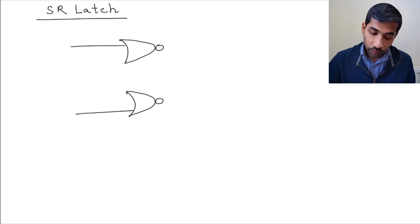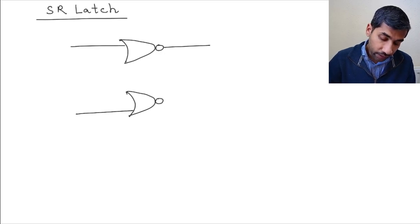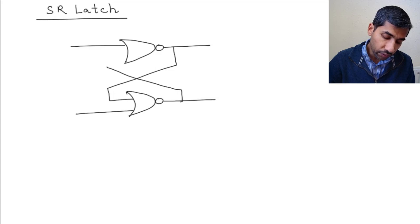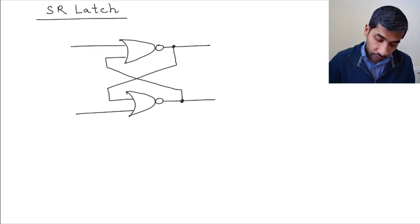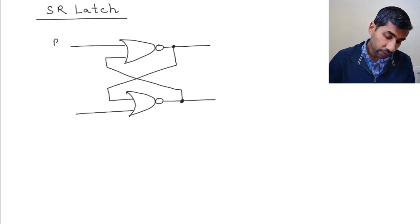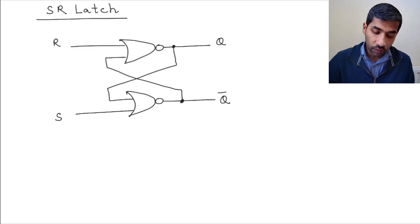And the way it's connected is the output of one of the NOR gates becomes an input to the second NOR gate. And similarly the output of this NOR gate goes and becomes the input to this NOR gate. So there's a connection here, there's a connection here. And this output is called R, this is called S, and this is called Q, and this is called Q bar.